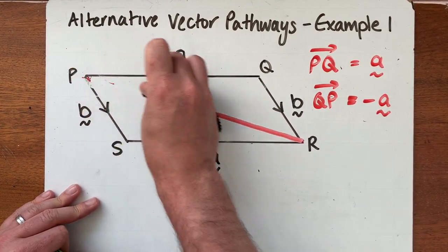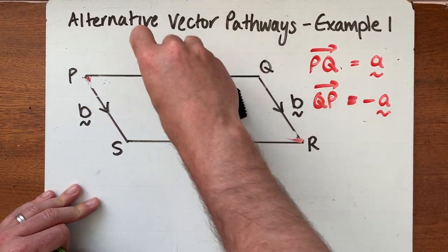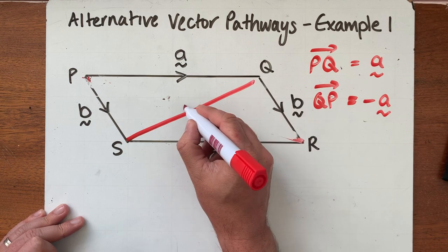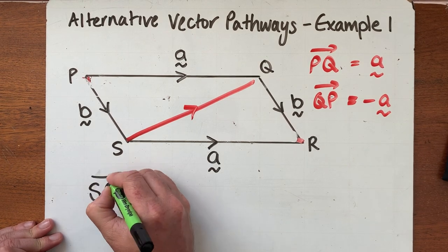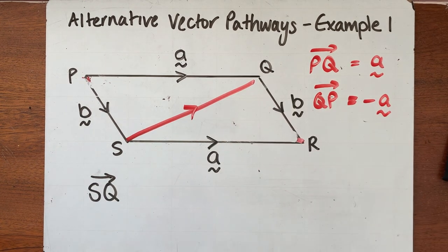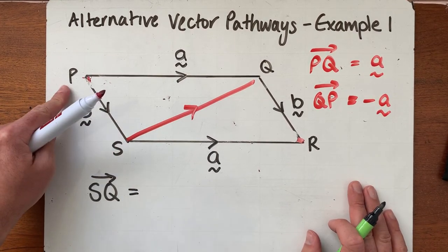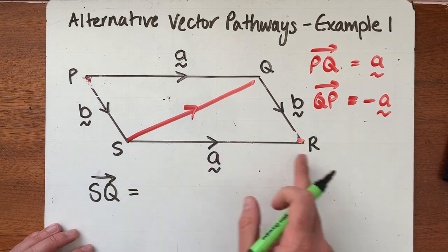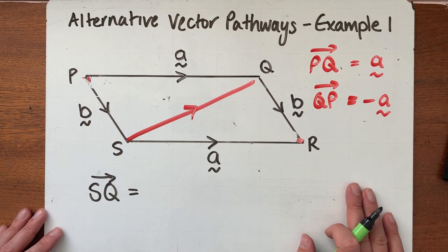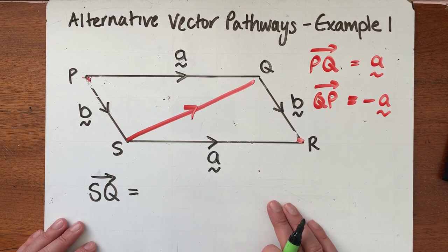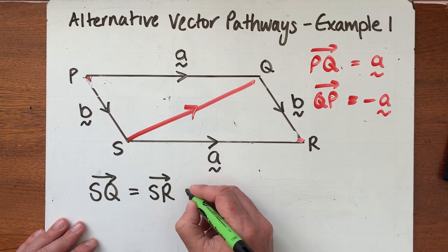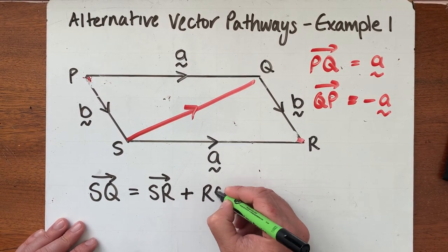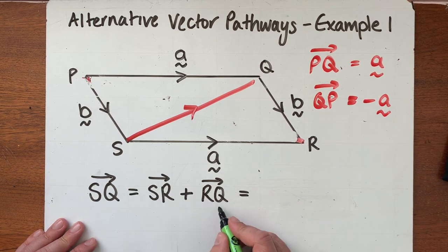Let's try another one. This time I want to go from S to Q. I'll mark that on — starting at S, wanting to get to Q. That direct road is blocked again. I have a couple of options: I could go up one vector and along another, or along one and up another. I'm going to go across first, so from S to R, and then from R up to Q.